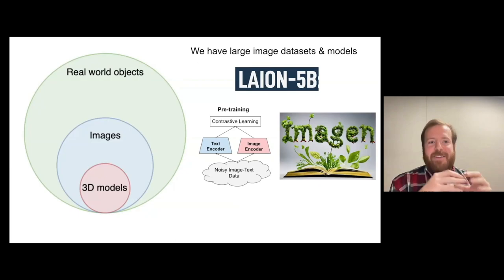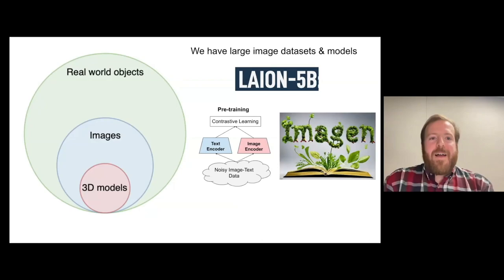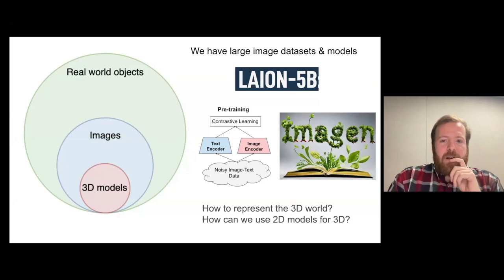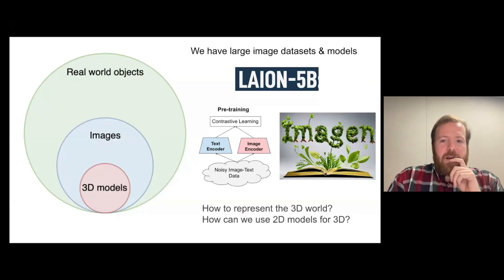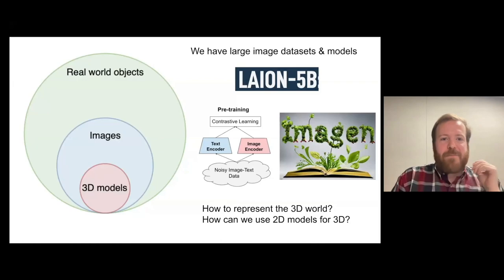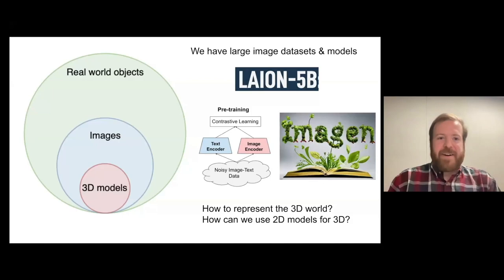We really need to find ways of incorporating other domains and modalities — leveraging what they've learned about the visual world to inform 3D generation. There are two main approaches: one based on contrastive learning or CLIP models, and another based on diffusion models. We need to choose a 3D representation — meshes, point clouds, or something else — and then figure out how to adjust it to match a text description.